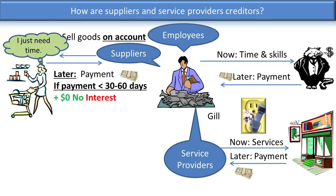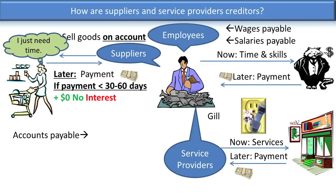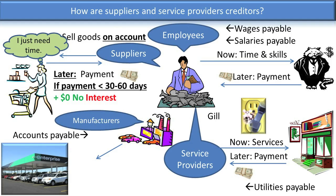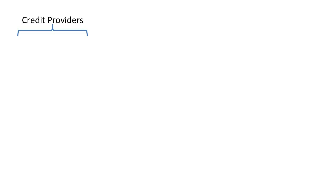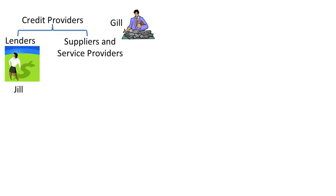When customers owe money to suppliers and service providers, the amounts owed are referred to as payables. For example, customers who purchase goods on account owe an accounts payable to the supplier. Companies who owe their employees for work performed owe wages and salaries payable. Companies who owe utility providers owe utilities payable. Gill could also represent a manufacturer; companies who owe manufacturers for products purchased on account owe accounts payable. For this course, we will call both groups — lenders Jill and suppliers/service providers Gill — creditors.